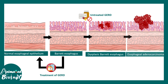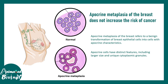Eventually that can lead to adenocarcinoma. These kinds of cell-shape transitions are risky — if irreversible, they often lead to pathological associations like cancer. However, apocrine metaplasia of the breast does not increase the risk of cancer, unlike the esophageal scenario.